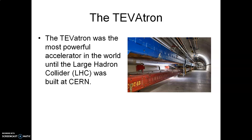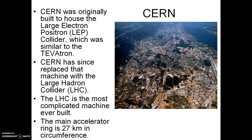The American physics community was faced with a dilemma. A decision was made by the United States and the countries in Europe to pool their resources. The old LEP at CERN, at the border of France and Switzerland, was decommissioned and removed, and in its place what was to be constructed is the Large Hadron Collider — much more powerful than the Tevatron and the old LEP. Construction began in the mid-1990s and was completed about 15 years later. This is an aerial photograph of CERN, located in Geneva, Switzerland, right on the border between France and Switzerland. The main accelerator ring is 27 kilometers in circumference — this machine is much more powerful than both the old LEP and the Tevatron.